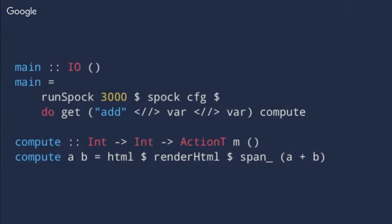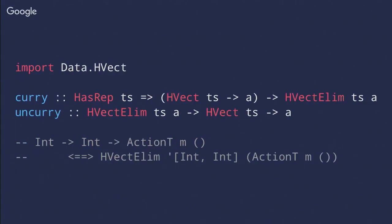The motivation was to make Spock really simple and easy to get started. Here's a basic small program with one endpoint: you pass in two numbers and it renders HTML with a span containing the result. It's really simple - the GET request takes two parameters and they are both going to be an Int, so if the user passes something that's not a number they'll get a 404 error. You don't have to worry about parsing.